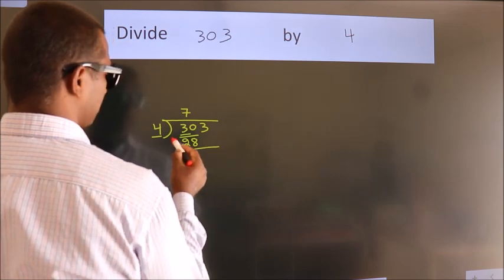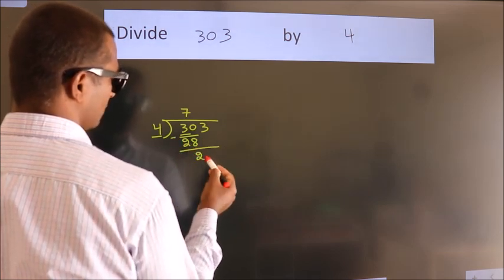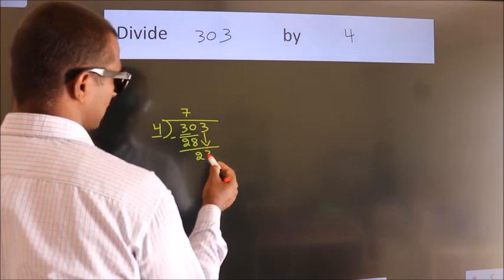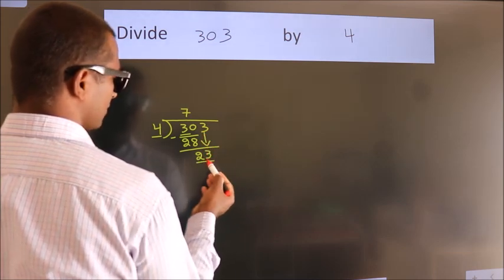Now we should subtract. We get 2. After this, bring down the beside number. So 3 down. So 23.